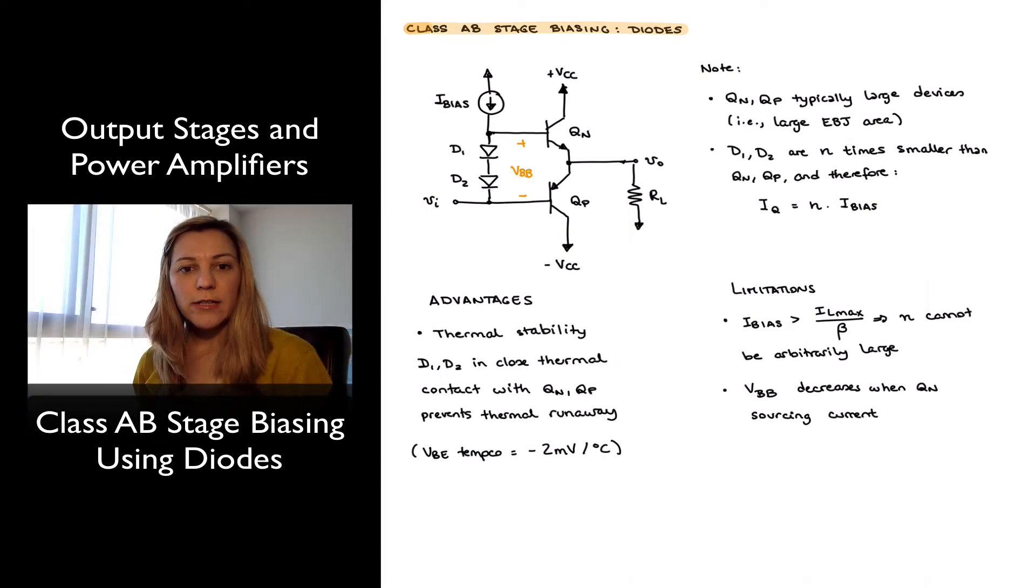So next we are going to take a look at some biasing configurations for a class AB output stage. We mentioned that in order to avoid that deadband region, we need to provide a voltage VBB to the bases of the output transistors so that the base emitter junctions will be turned on even when the signal is equal to zero.